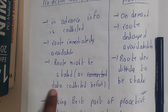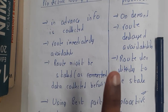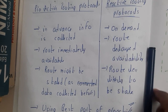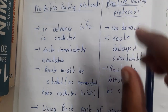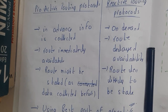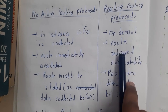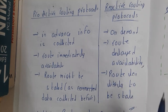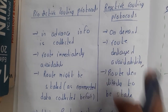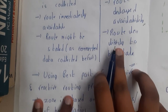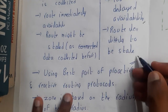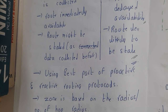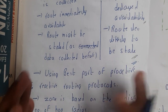Similarly, the reactive routing protocol works on demand — whenever there is a request, it will start working. There is a route delay since it needs to find the path first. However, the route is less likely to be stale; it gets real-time data rather than old data.